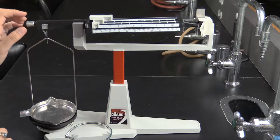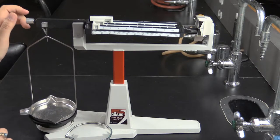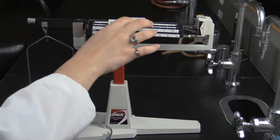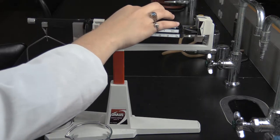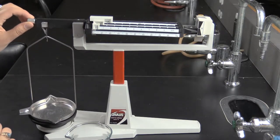However, with this style of balance, it will take a bit longer. First, slide all of the sliders to their zero marks. These can be found on the far left.